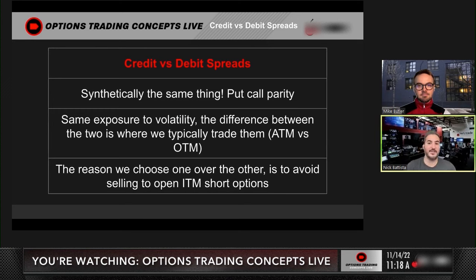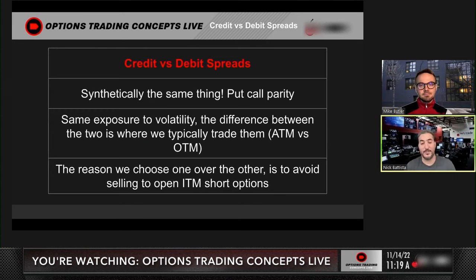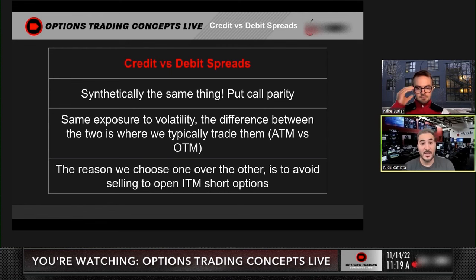These positions have the same exposure to volatility. The difference between the two is where we typically trade them. We talk about trading out-of-the-money positions — we sell out-of-the-money put spreads or out-of-the-money call spreads. If we're going to do a long spread, a debit spread, we're typically trading those at the money, maybe slightly out of the money. It really comes down to where those positions are being traded, because we know they're the same position from a risk-reward perspective and from their exposure to the Greeks.